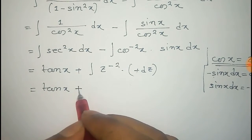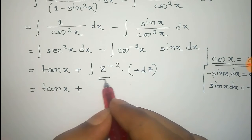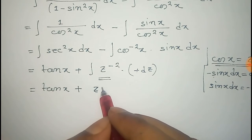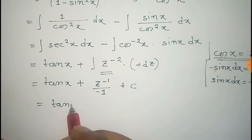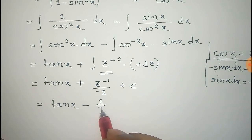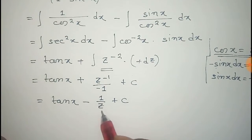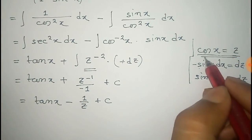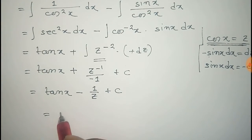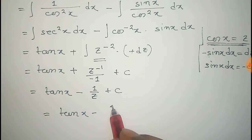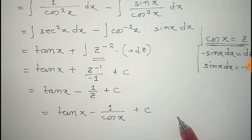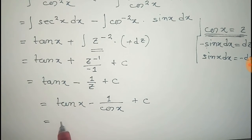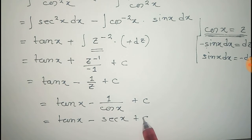The two negatives cancel, giving a positive. The integral of z to the power minus 2 is z to the power minus 1 divided by minus 1, plus constant c. That gives tan x minus 1 over z plus c. Substituting back z equals cosine x, we get tan x minus 1 over cosine x plus c, which equals tan x minus sec x plus c. This is the integral of 1 divided by 1 plus sin x dx.